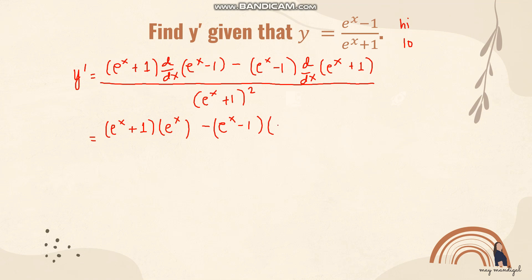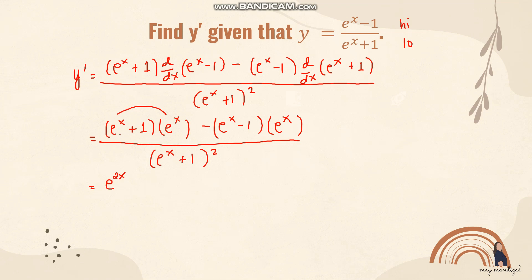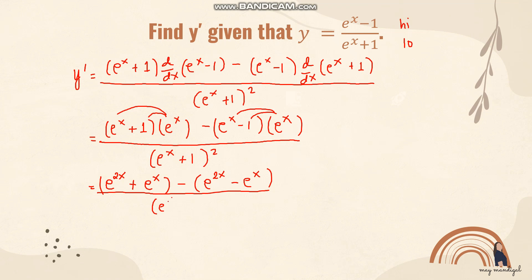The derivative of e raised to x minus 1 is just e raised to x, since the derivative of the constant negative 1 is 0. Similarly, the derivative of e raised to x plus 1 is also e raised to x. So we have e raised to x plus 1 times e raised to x, minus e raised to x minus 1 times e raised to x, all over e raised to x plus 1 squared. Distributing e raised to x gives us e raised to 2x plus e raised to x in the first part, and e raised to 2x minus e raised to x in the second.